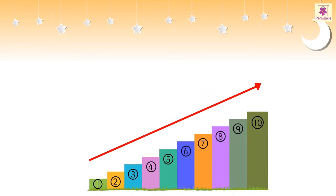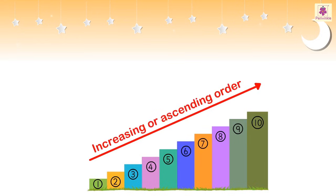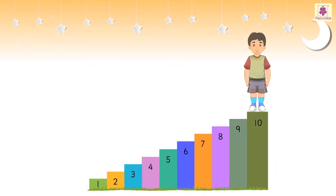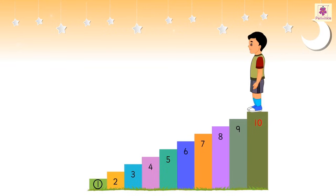Thus we say that when the numbers are arranged from the smallest to the greatest, they are in the increasing or ascending order. Here is our friend Rahul again — he is on step number 10 and has to come down to step number 1.